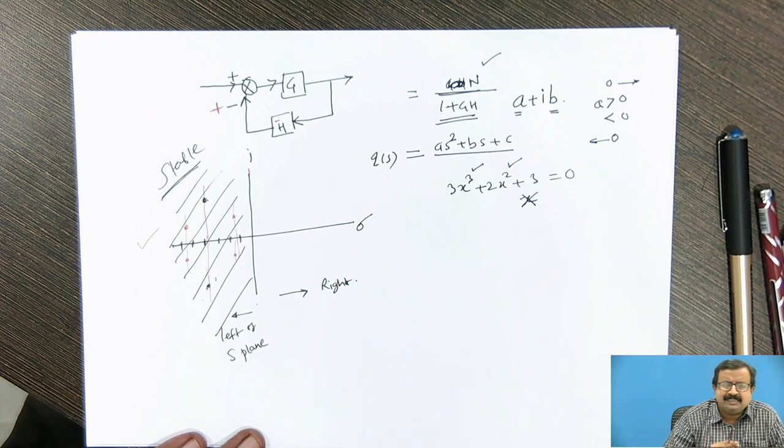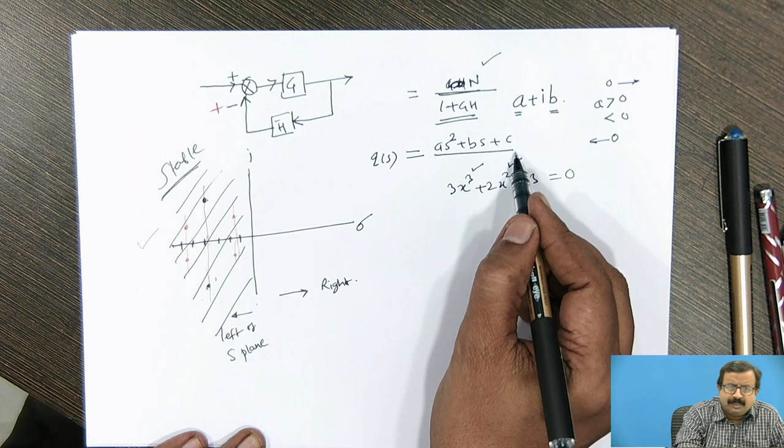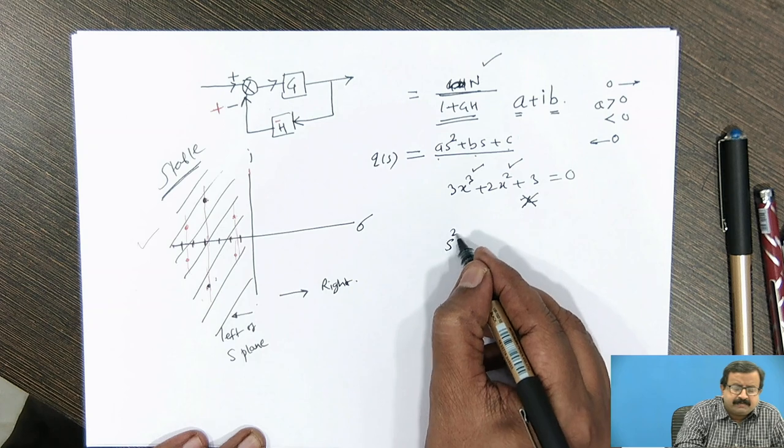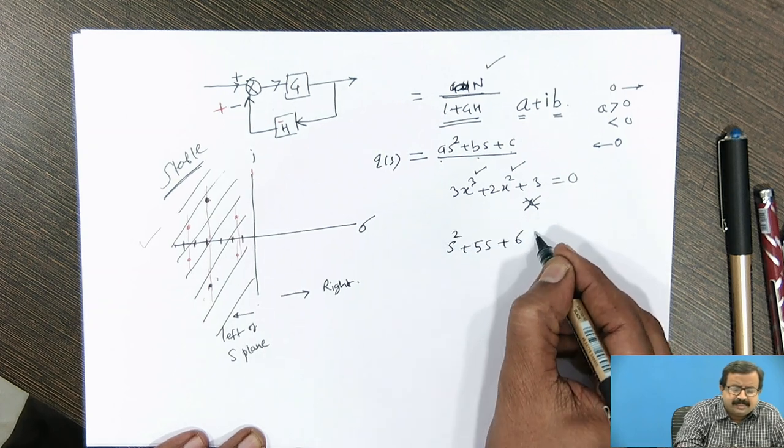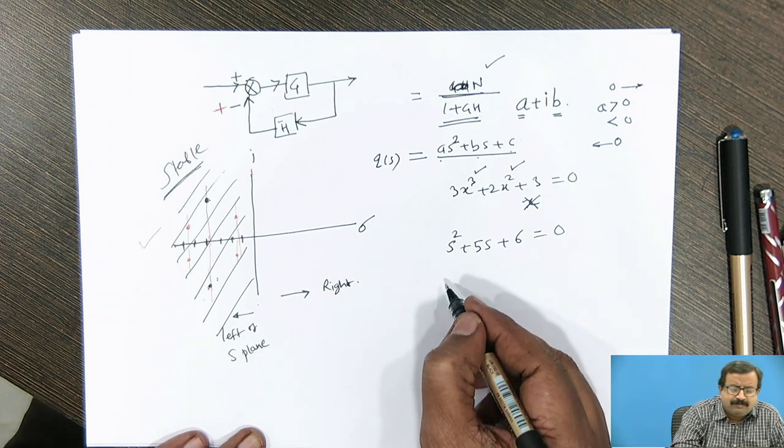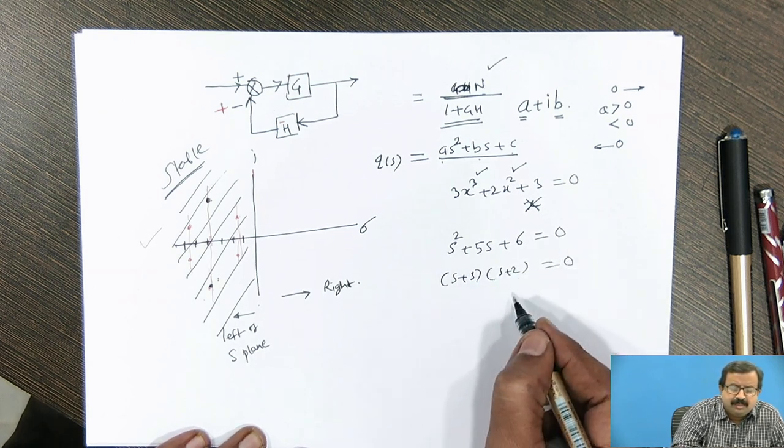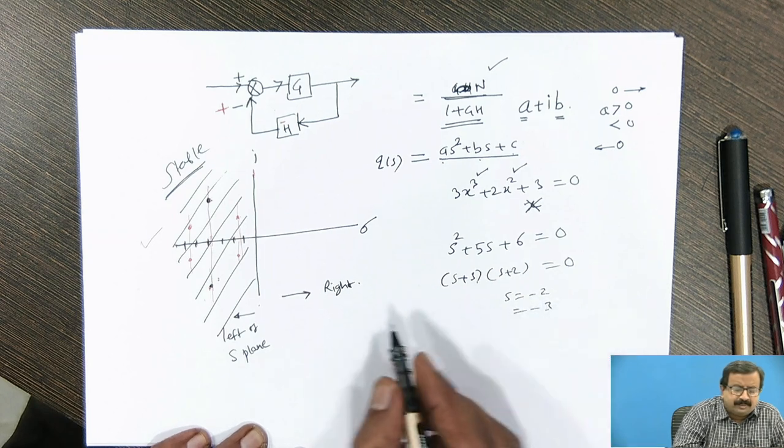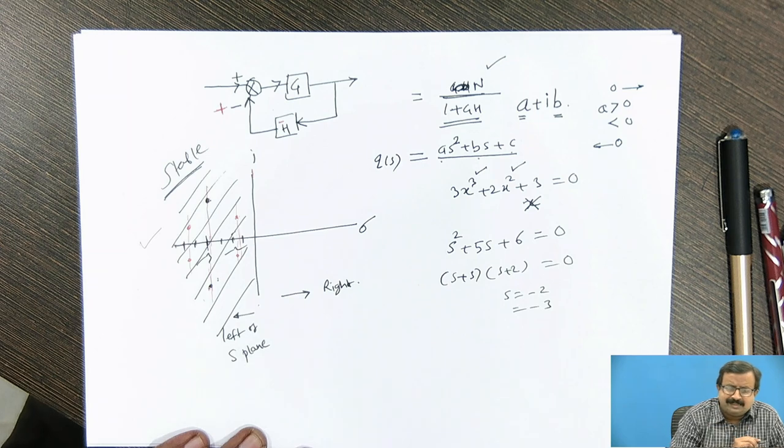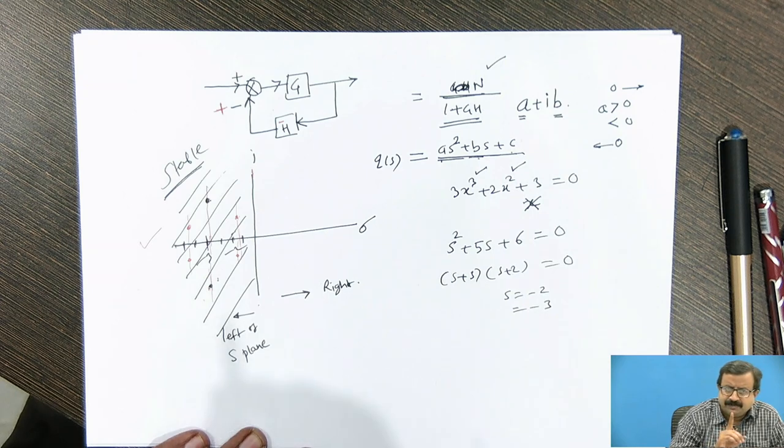First condition, necessary condition is that equation must be a complete polynomial. And because it is complete polynomial, that is a square plus bs plus c, or I will take another example, say it is s square plus 5s plus 6 is equal to 0. If I see this polynomial and factor this, you will factor this as s plus 3 and s plus 2 is equal to 0. So what are the values? s is equal to minus 2 and s is equal to minus 3. So it will be minus 2 here and minus 3 here. Essential condition is that all the terms must be present. It must be a complete polynomial, that is the first condition.